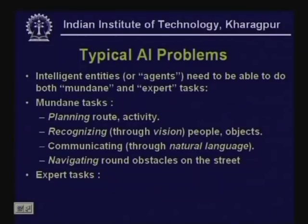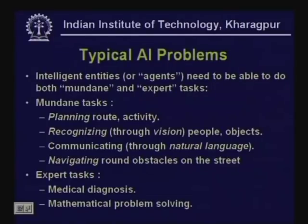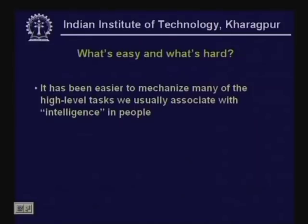Most animals do these mundane tasks routinely. Then there are expert tasks, like medical diagnosis, which only a doctor who is an expert in the field does, and mathematical problem solving, which can be done effectively only by good mathematicians. Now, which of these problems are easy for the computer to do and which are hard?